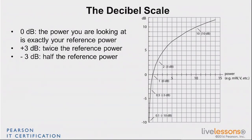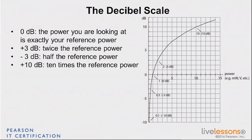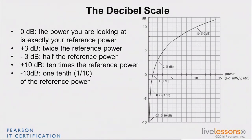The last rule is the rule of 10s: every time you multiply by 10, you add 10dB. So if you inject 1 milliwatt and get 10 milliwatts on the other side of your amplifier, you're adding 10dBm. And if you divide by 10, you remove 10dB. Times 10 is +10dB; divide by 10 is −10dB.